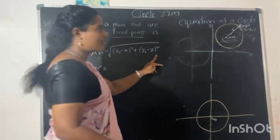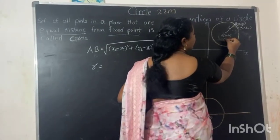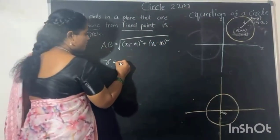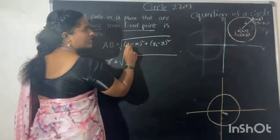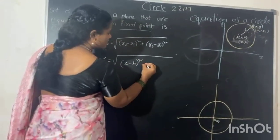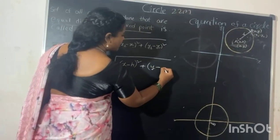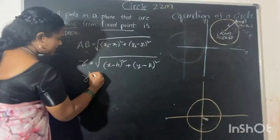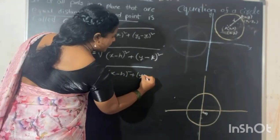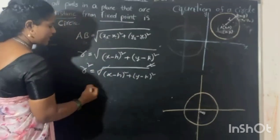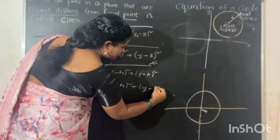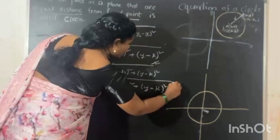We substitute the coordinates: x1, y1 for the center point and x2, y2 for the point on the circle. Working through the formula, we arrive at: (x minus h) whole square plus (y minus k) whole square equals r squared. This is the equation of the circle.